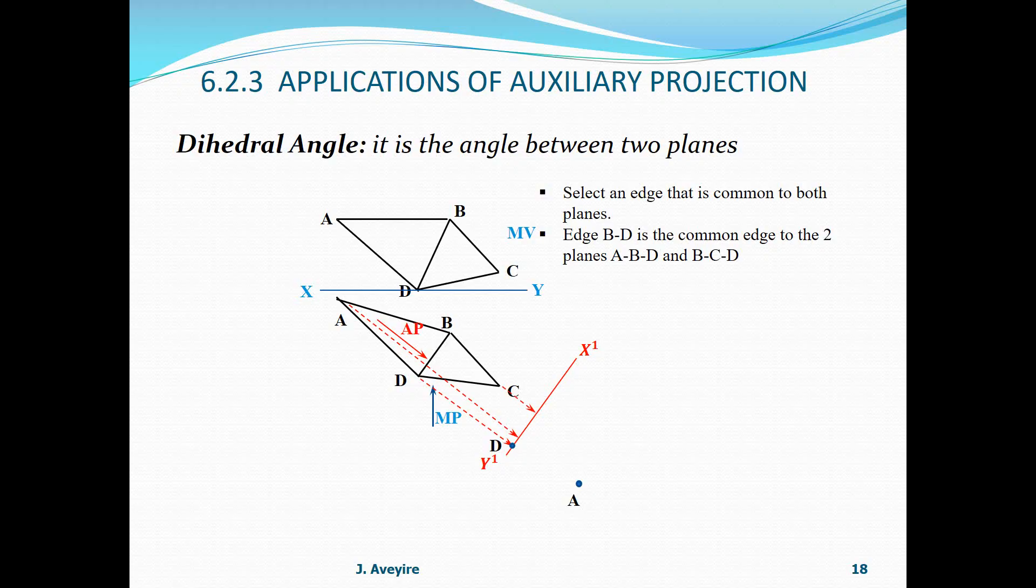Then, we go for the next projector through C. We pick the distance on the mutual view or front view perpendicular to XY and plot it. Then, our last point, point B. We pick again its perpendicular distance from XY and plot it.